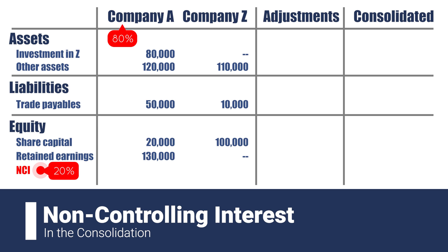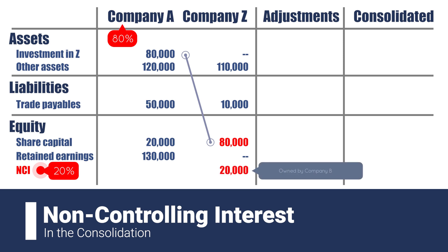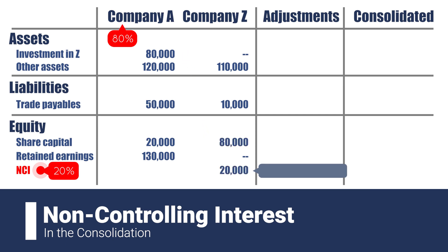In Company Z's share capital, we notice that it is the full figure of $100,000, of which 80% or $80,000 is owned by Company A. By the definition of the standard, we split the share capital into two sections: those owned by A and those owned by the NCI — in this case, Company B. The part owned by A is cancelled out by the investment account it holds in the assets of the parent, and the part owned by NCI is reclassified as a new section of equity, which only exists in the consolidated financial statements.